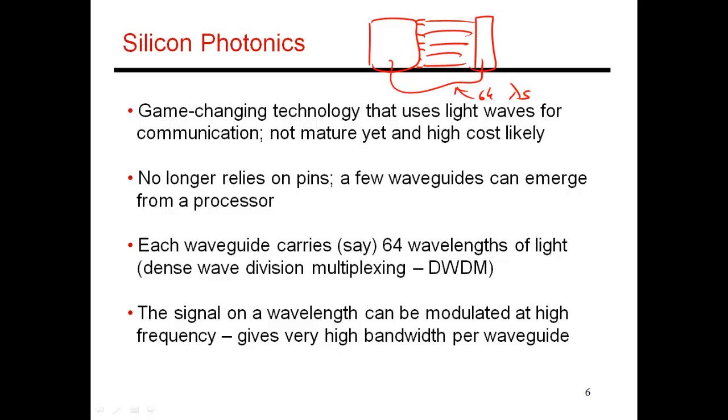And these optical signals can also be modulated at a higher frequency. That is, I can switch between a 0 and a 1 at a very high frequency. So not only can I carry 64 bits of data at a time, that data can be switching at a very high speed, which gives me extremely high bandwidth.